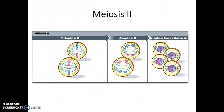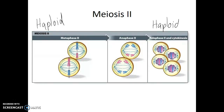When we look at meiosis II, we see that it will be very similar to mitosis. The only difference is that we're starting with cells that are haploid. After they go through metaphase II, anaphase II, and then telophase II, we still end with cells that are haploid. Both divisions — meiosis I and meiosis II — are required to produce the haploid cells that become gametes.